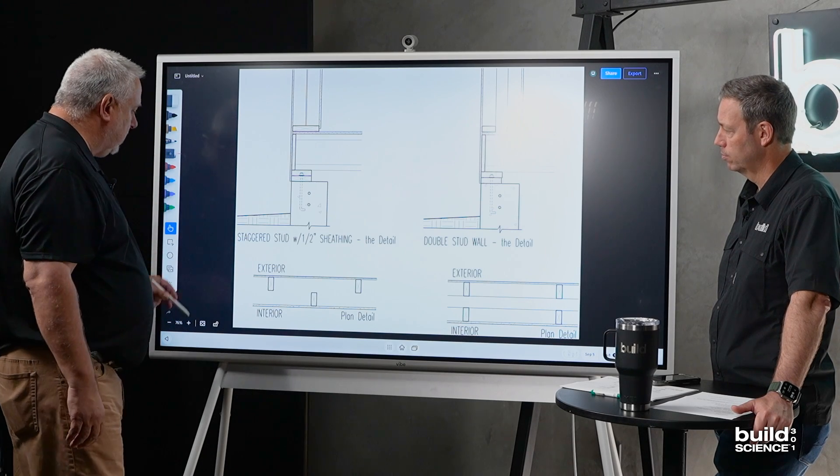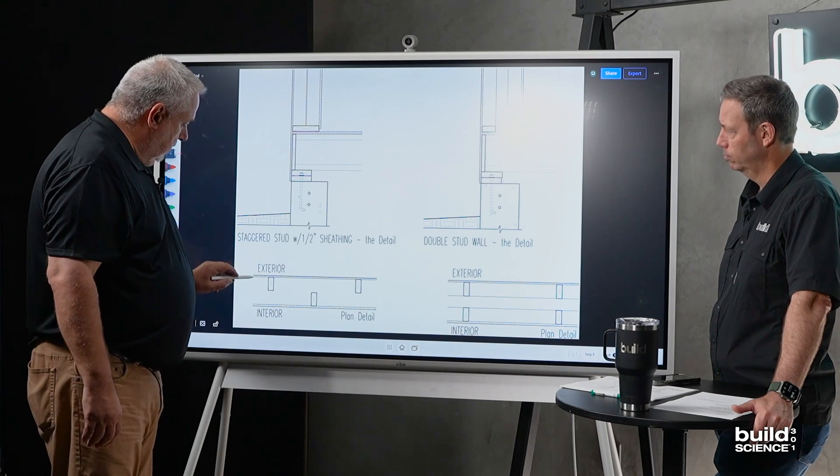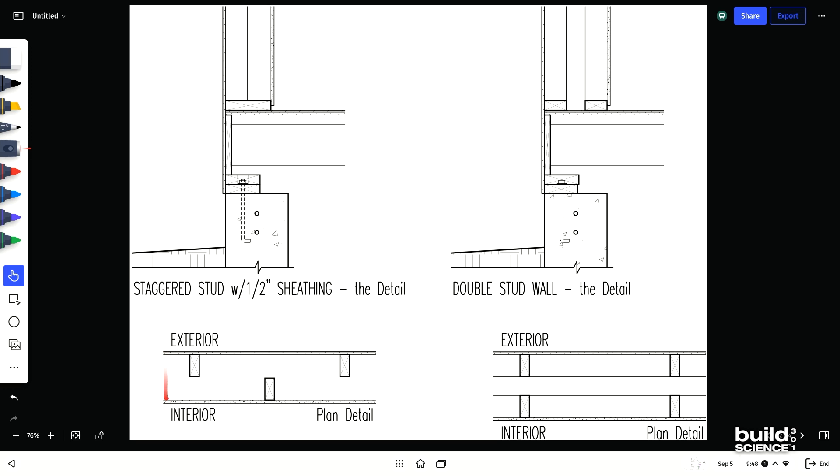Staggered stud. What is a staggered stud? Very simply, we could do a wider plate. You could do a 2x6 plate here. When I do them, I typically do a 2x8 plate.